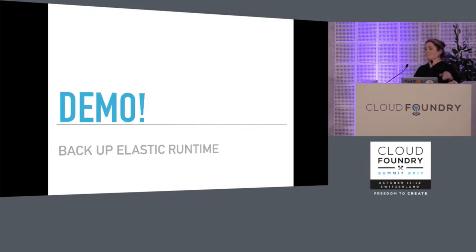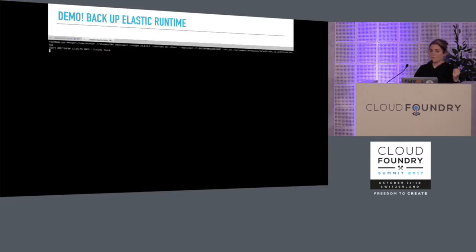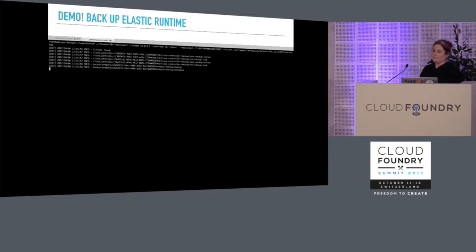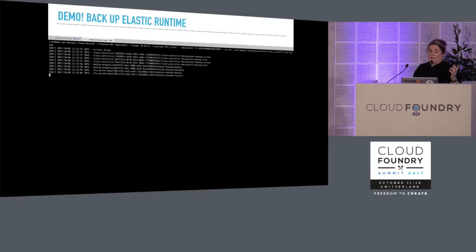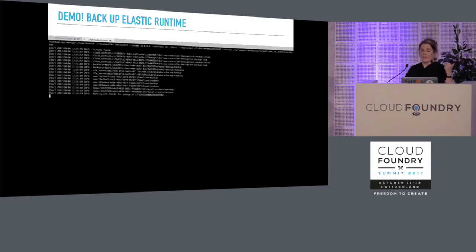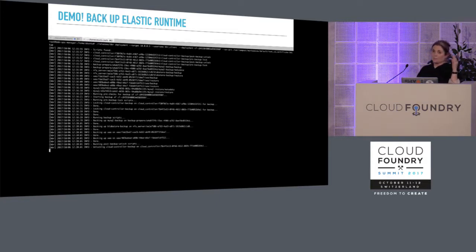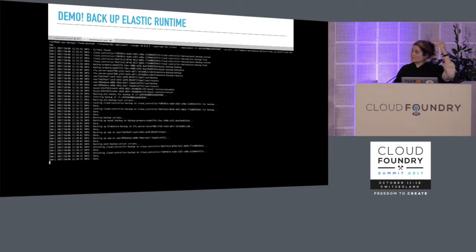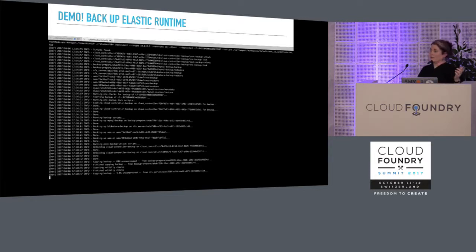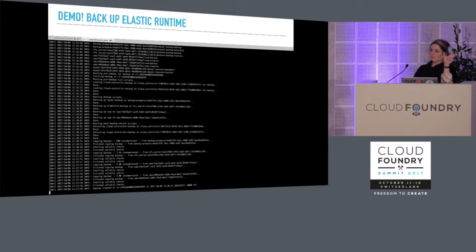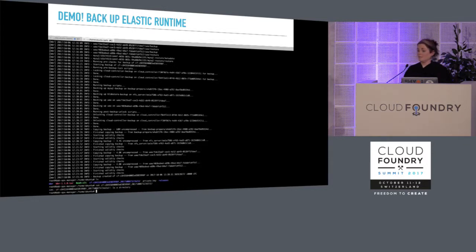I'm going to show a demo — it's a video, I sped it up, and I have really bad luck with live demos. This is backing up Elastic Runtime, which is Pivotal's Cloud Foundry. In this case we're using the Ops Manager VM as a jump box because it has access to the ERT network. We've passed in the BOSH Director IP, login, and the BOSH name of the deployment. You can see that BBR outputs quite a lot of useful information about what it's doing at every step. The artifact gets copied after the unlock scripts are called, and after the backup is taken BBR checksums each artifact and creates a metadata file with a list of artifacts and checksums and the time the backup was started and finished.